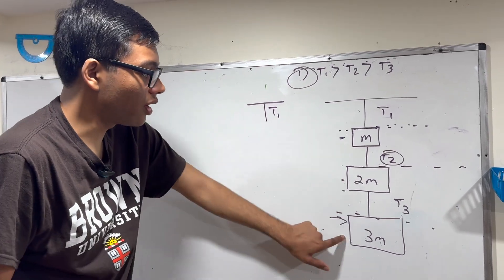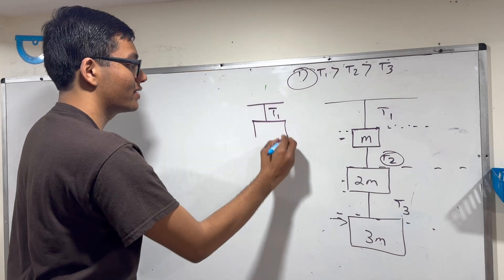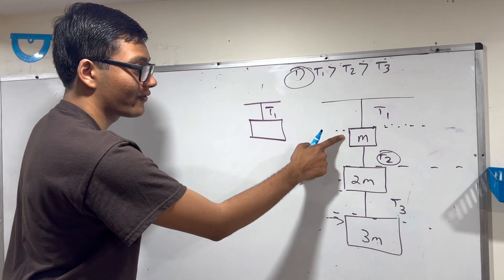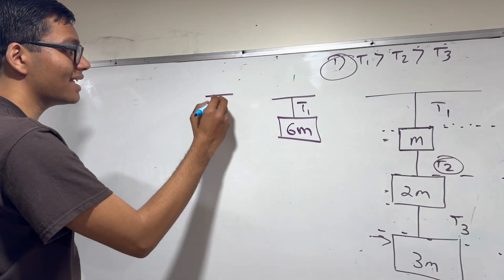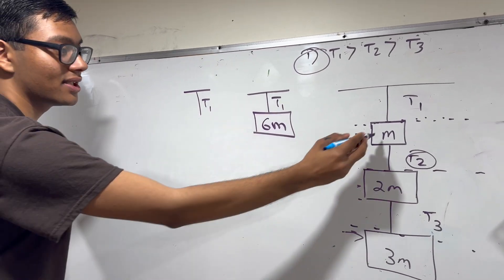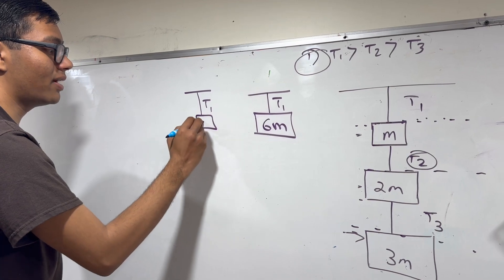So for example, the first rope T1, what it's really thinking is it has to pull all three of these masses, so effectively it has to carry a weight mass of m plus 2m plus 3m, which is 6m.